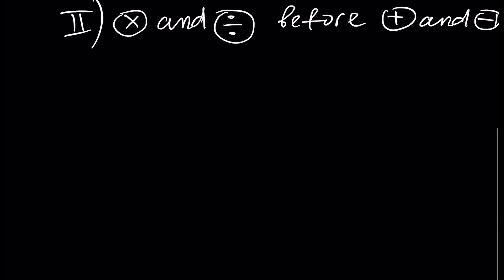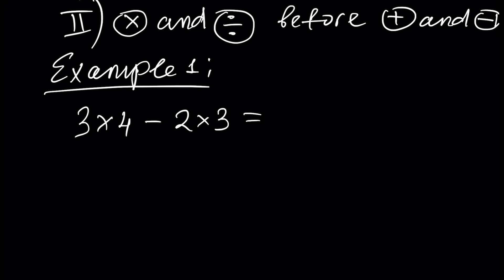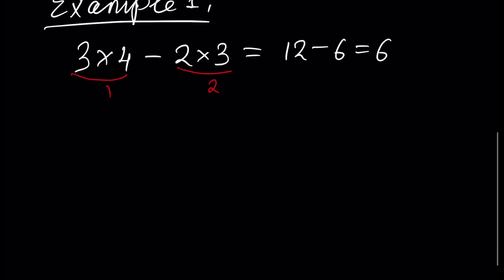Let's give some examples. Example 1: assume we have 3 times 4 minus 2 times 3. In this case, since multiplication and division are done before plus and minus, first we have to solve these two parts of our example, and we will have 12 minus 6, which is 6.